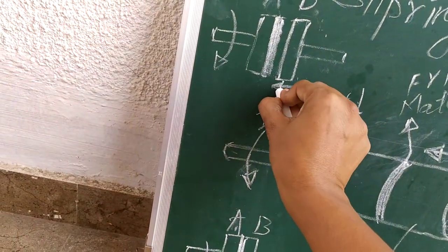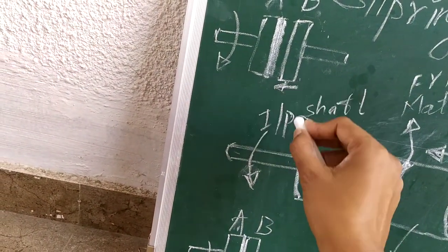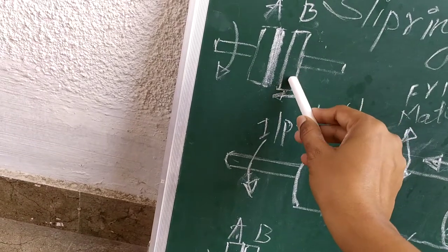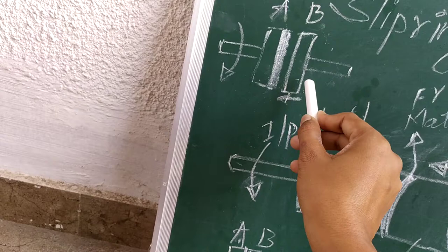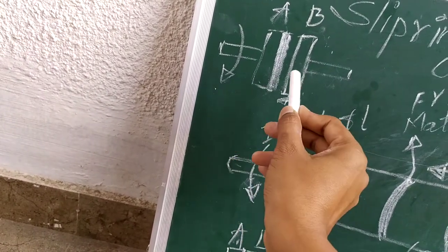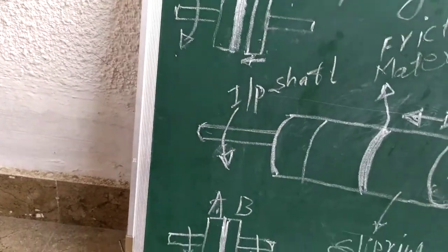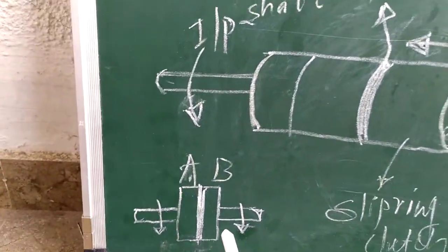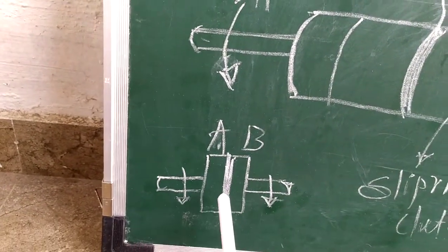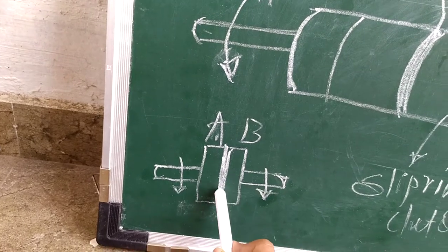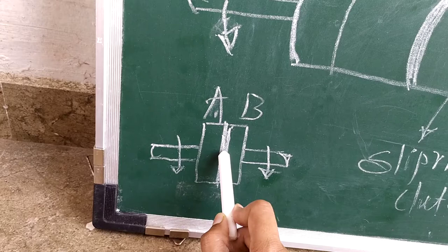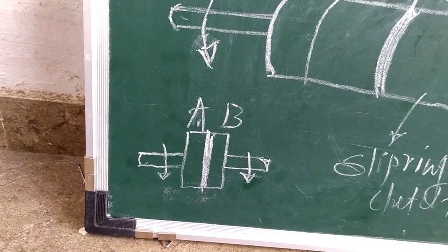Now when we gradually engage, I am saying gradually means slowly. When we gradually engage the plate B with A, means if we push this towards the left side slowly, then what will happen? Slowly, the B starts rotating as the friction area is between these two plates. This works on the phenomenon of friction.